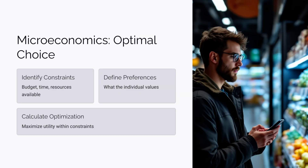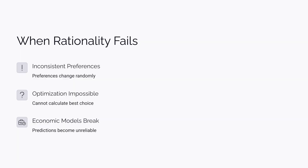Let's revisit microeconomics. We explore what choices are optimal under given constraints. For example, suppose someone earns $10,000 a month — they could spend it on food or car payments, mortgage installments, and so on. Microeconomics calculates which combination of choices is optimal. If this person isn't rational, we can't find an answer. At the very least, their preferences must be consistent. If they prefer bananas to apples one day, strawberries the next, and watermelon the day after, we can't calculate anything. Rationality just means their preferences are consistent. Without this consistency, optimization in microeconomics becomes meaningless.